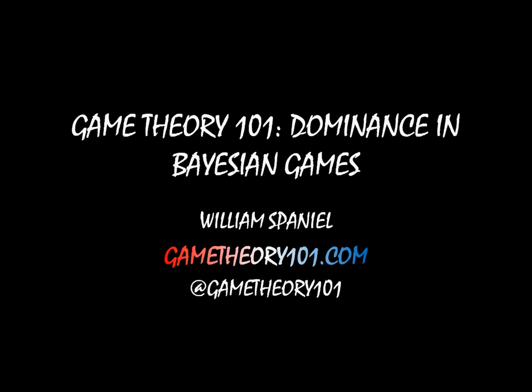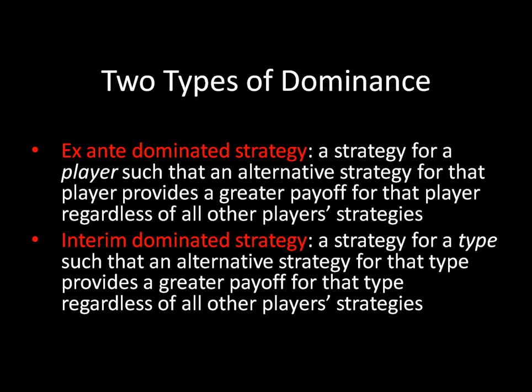As it turns out, there are two different types of dominance in games of incomplete information: ex-ante dominance and interim dominance. The difference is that in one case we're focusing on a player, and in the other case we're focusing on specific types. Ex-ante deals with the player. An ex-ante dominated strategy is a strategy for a player such that an alternative strategy for that player provides a greater payoff for that player, regardless of all other players' strategies. So the word 'player' is repeated three times in the definition of ex-ante dominance.